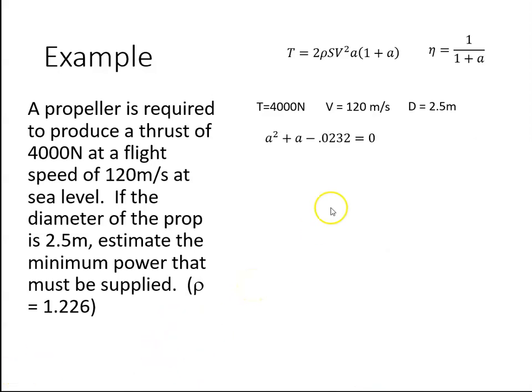So there's our quadratic. To solve it, we'll use the quadratic equation for the roots: a equals minus b plus or minus square root of b squared minus 4ac, all over 2a.